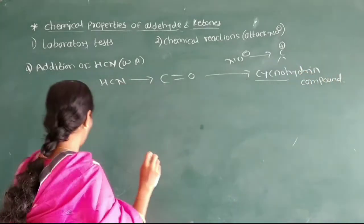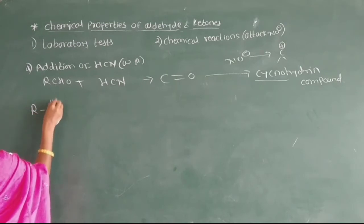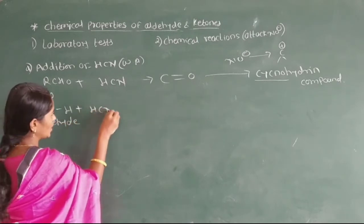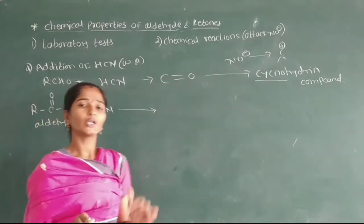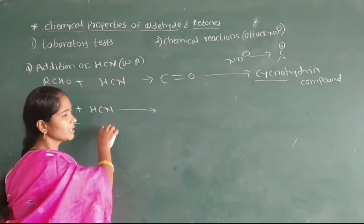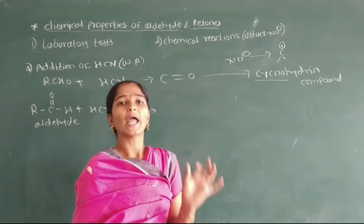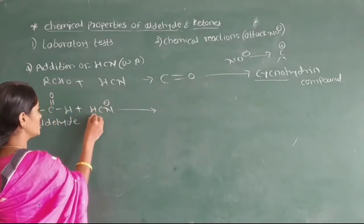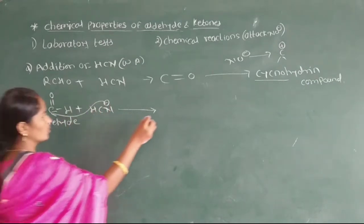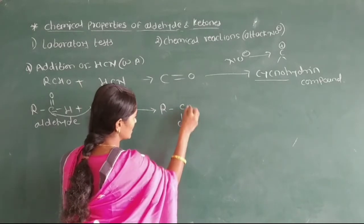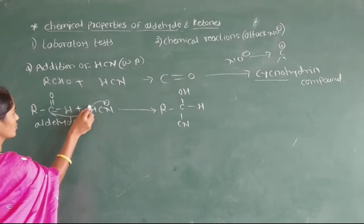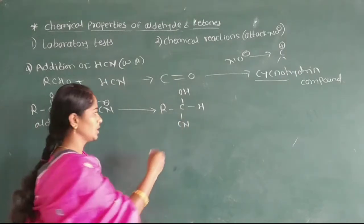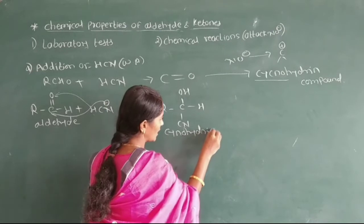We see an example of this reaction. Here, R-CHO (aldehyde) reacts with hydrogen cyanide. In this reaction, the negative part of cyanide — the nucleophile — adds into the carbonyl carbon of the aldehyde, and formation of R-CH(OH)(CN) occurs. This product is called a cyanohydrin compound.